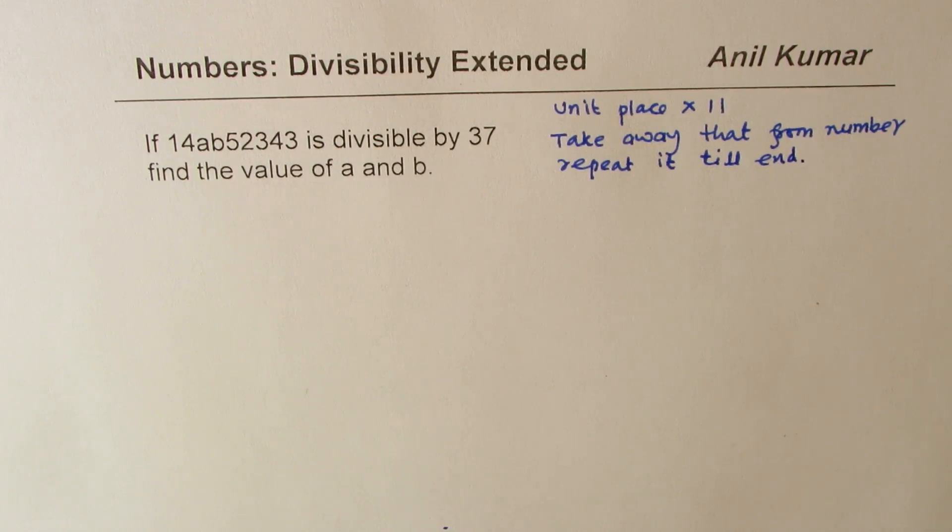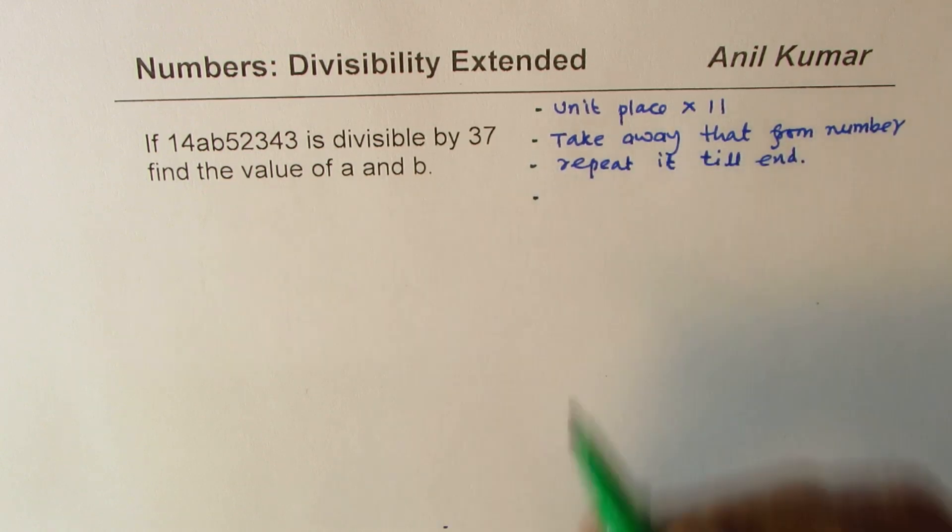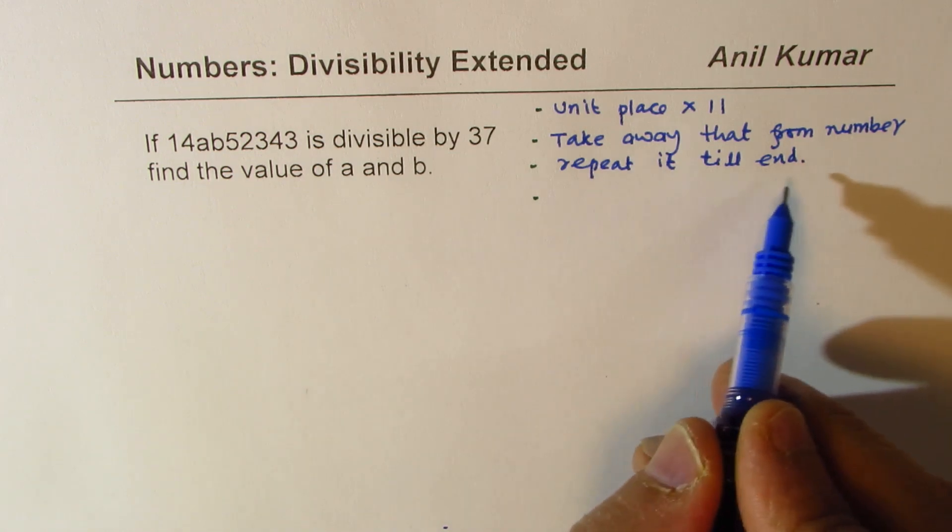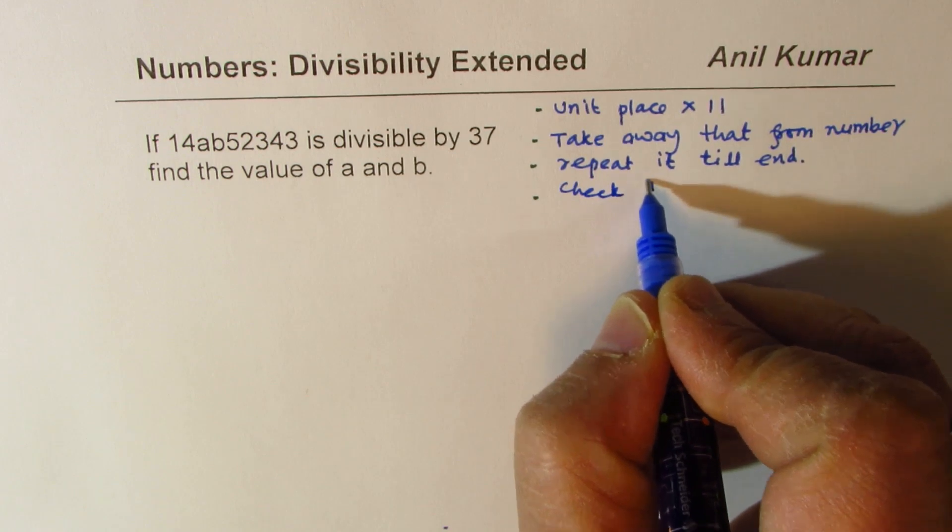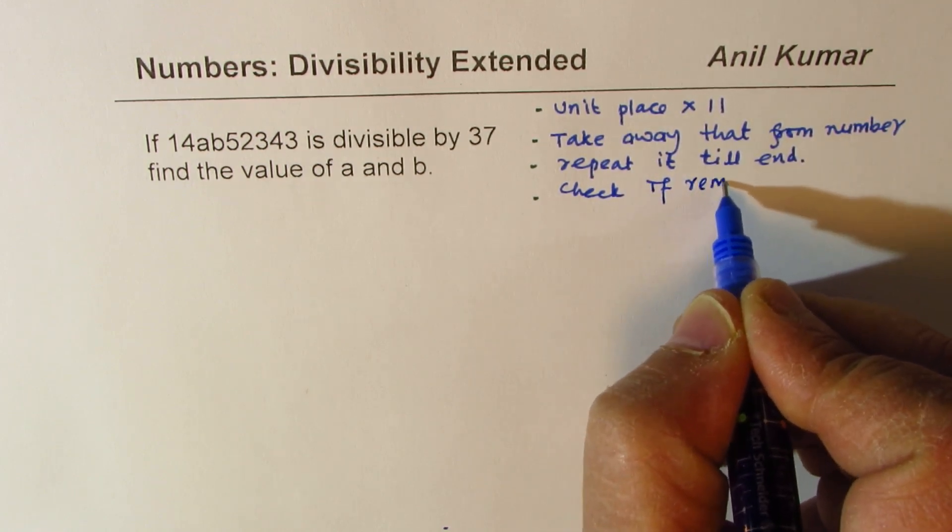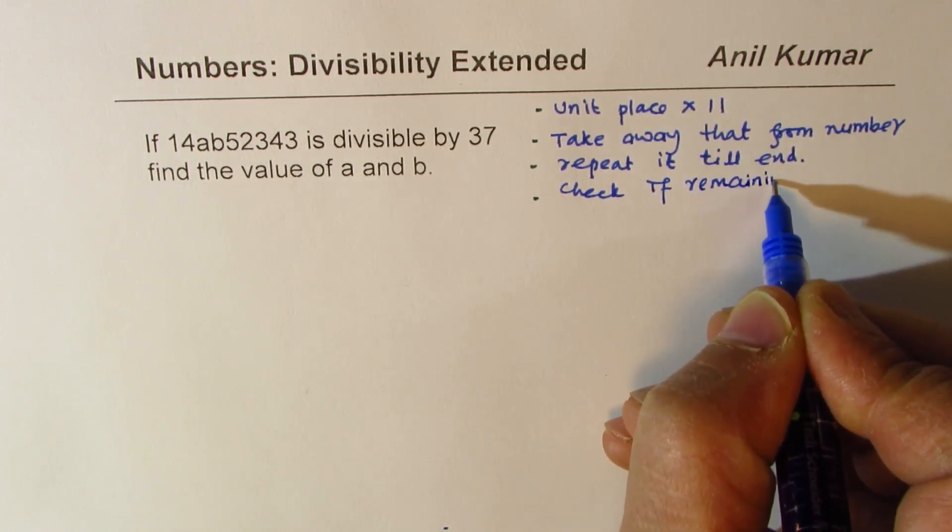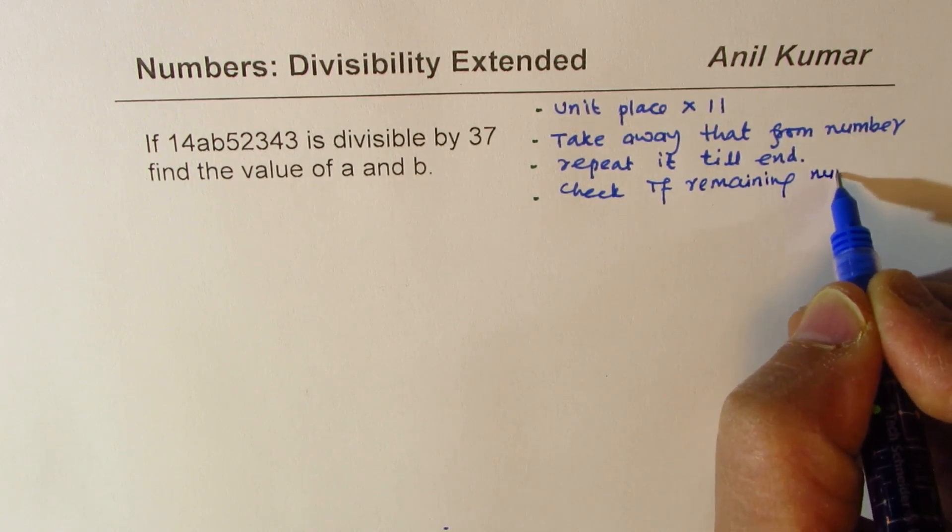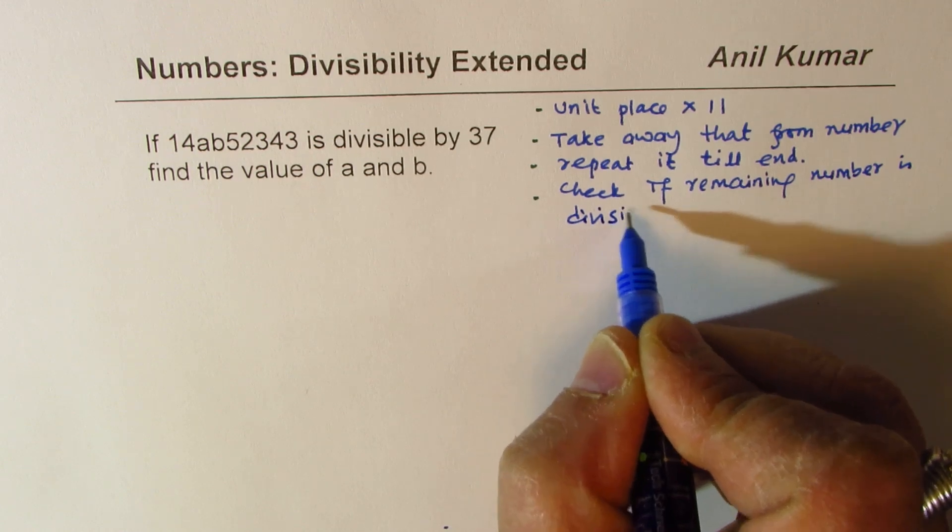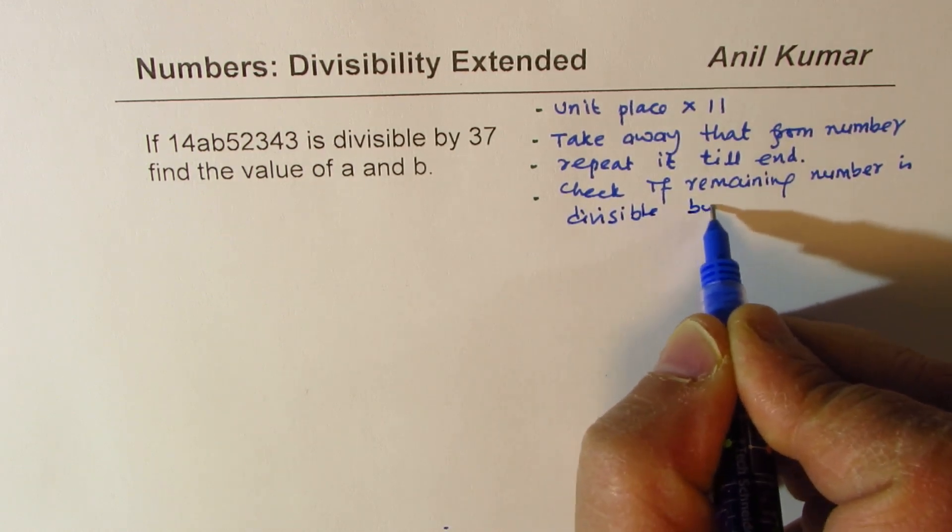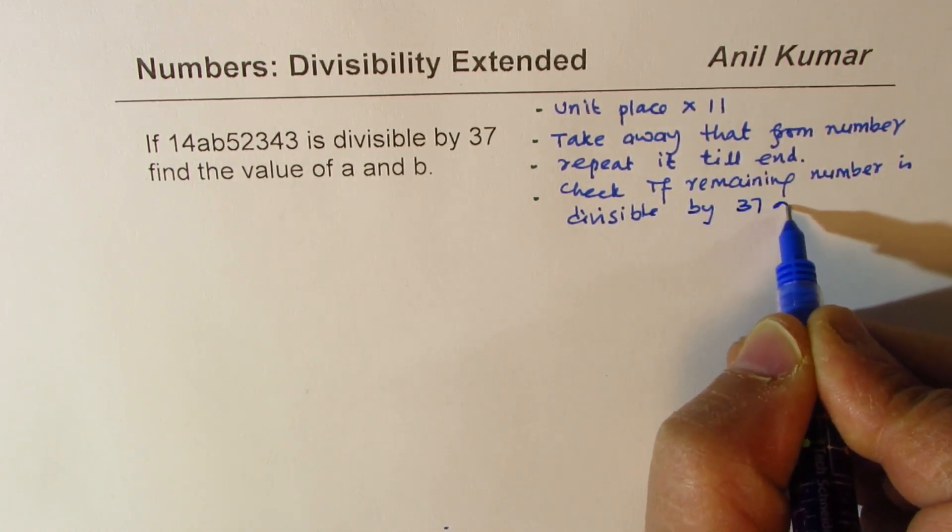Till end means you'll be left with last two or three digits. In that case, check if the remaining number is divisible by 37 or not.